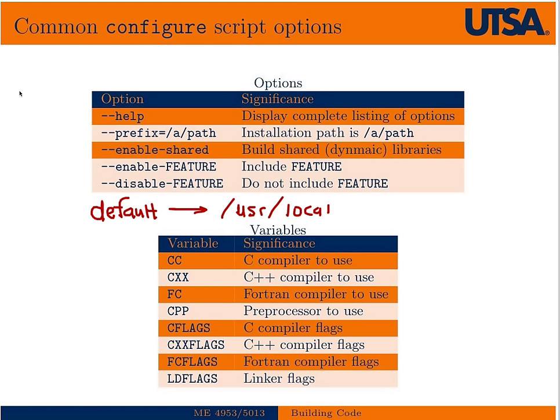My advice is to look at the configure help first and see what's in there and what you'd like to configure. There are also a bunch of variables that configure uses to set up the makefiles. The variable CC is your C compiler, CXX is the C++ compiler, FC is the Fortran compiler, CPP is the preprocessor, and then there are CFLAGS, CXXFLAGS, FCFLAGS, and any linker flags. For the purposes of this class you won't need to change anything — you can just use the defaults.